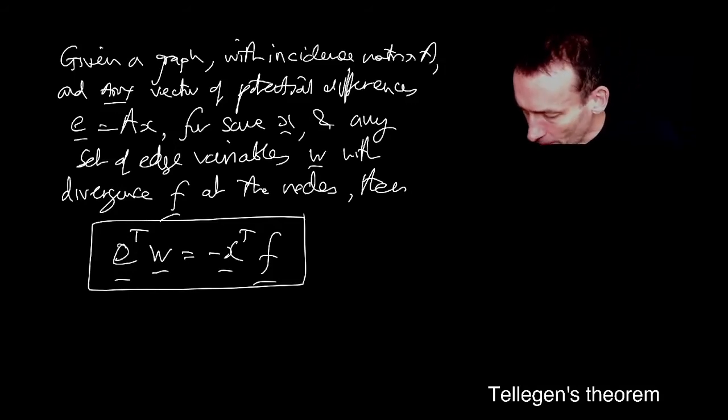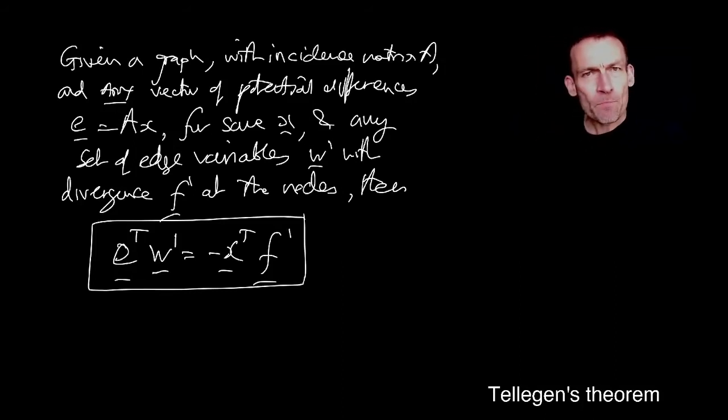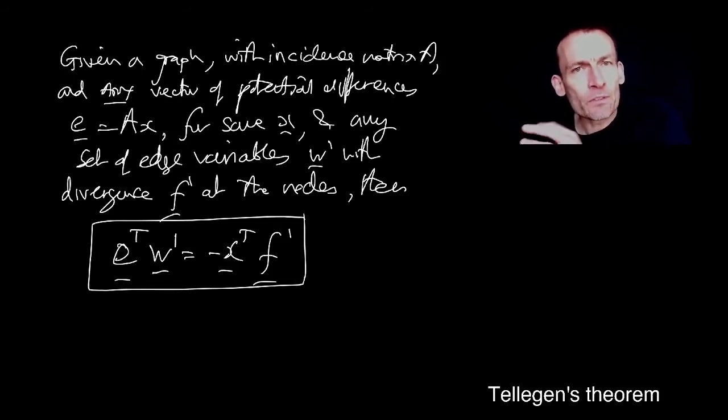I'm going to put a prime on the w and the f, because I want to emphasize that we've been thinking all along in this course so far that you can get E, the vector of potential differences, from the x, and then you can define a current which are the edge variables based on the E. But in this theorem, there is no connection at all between the node variables and the edge variables.